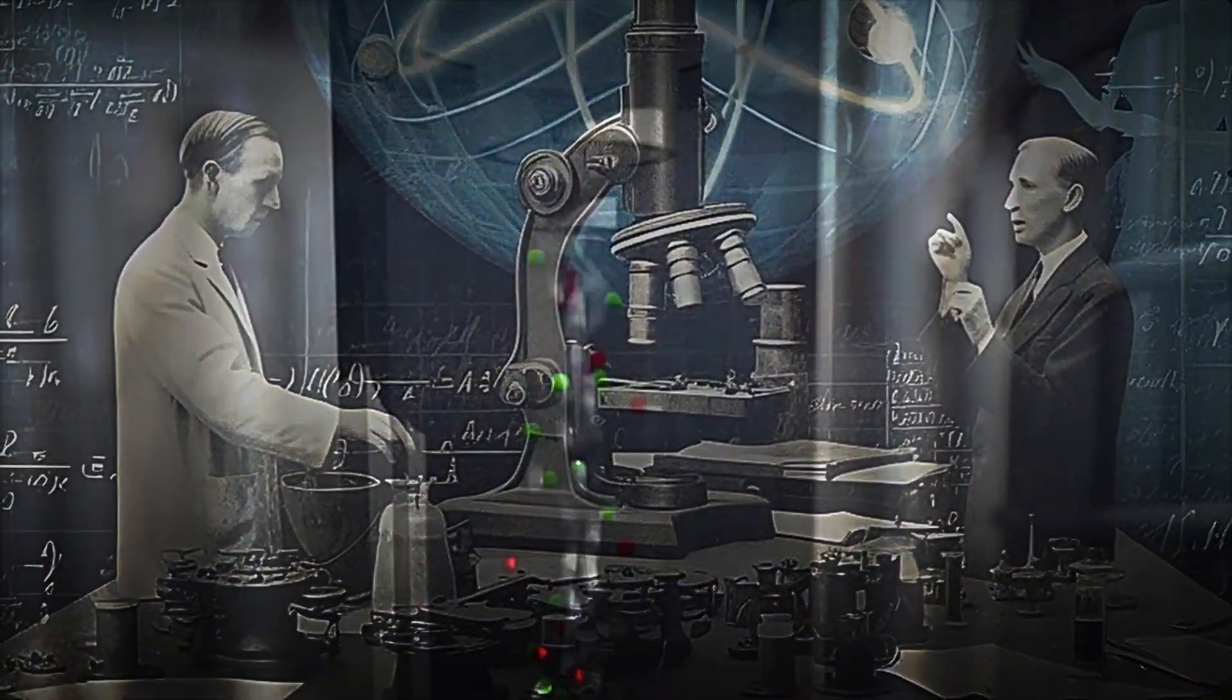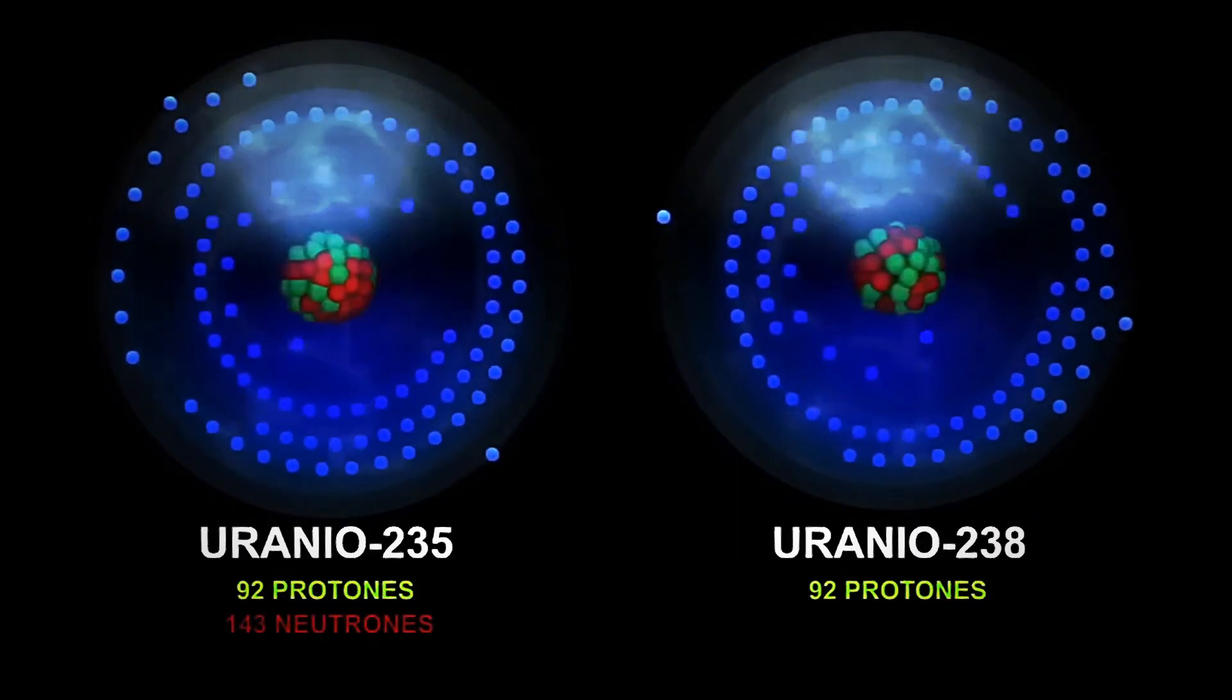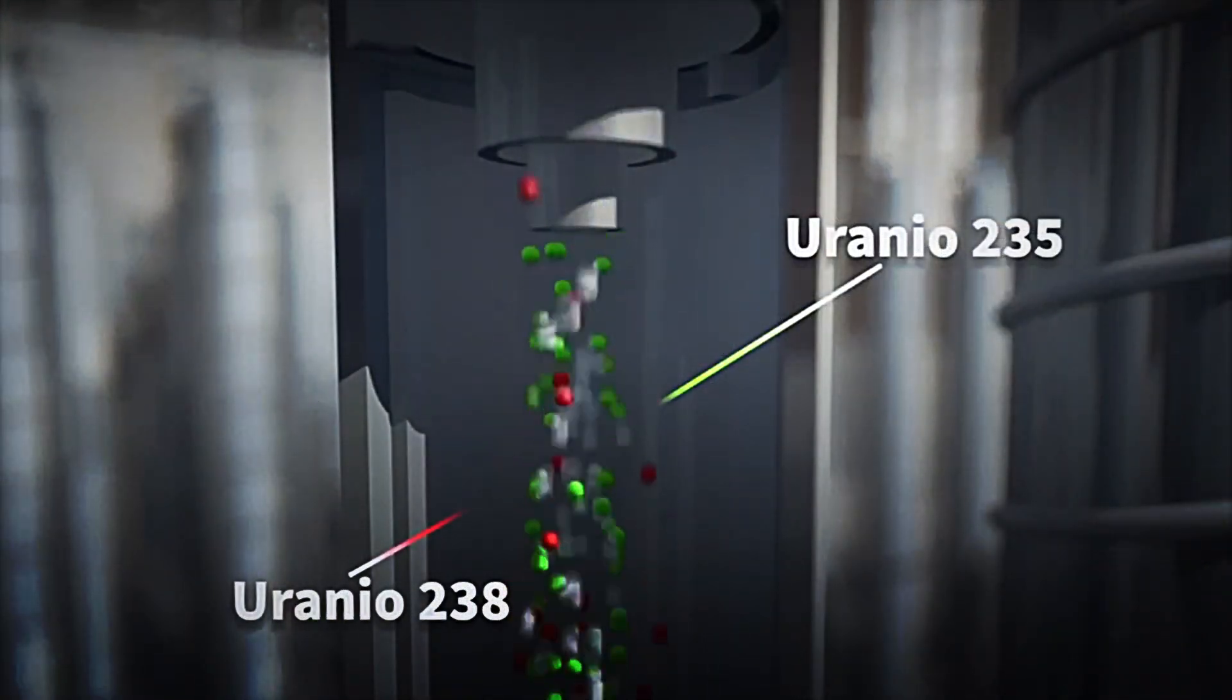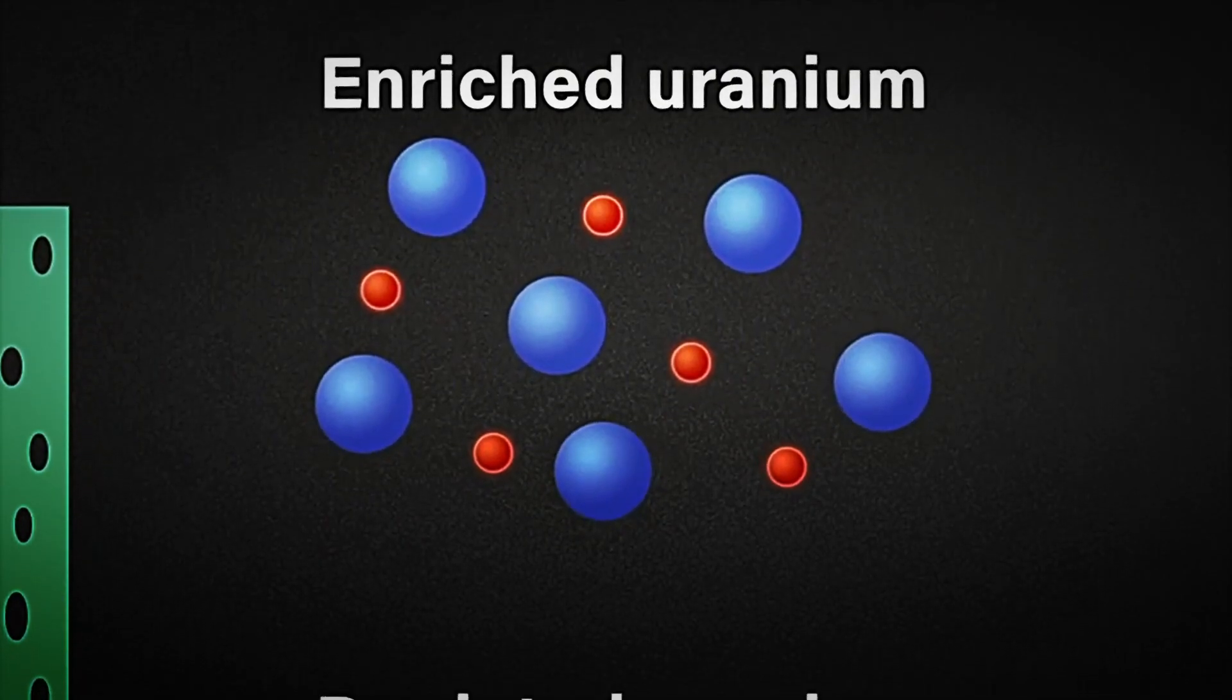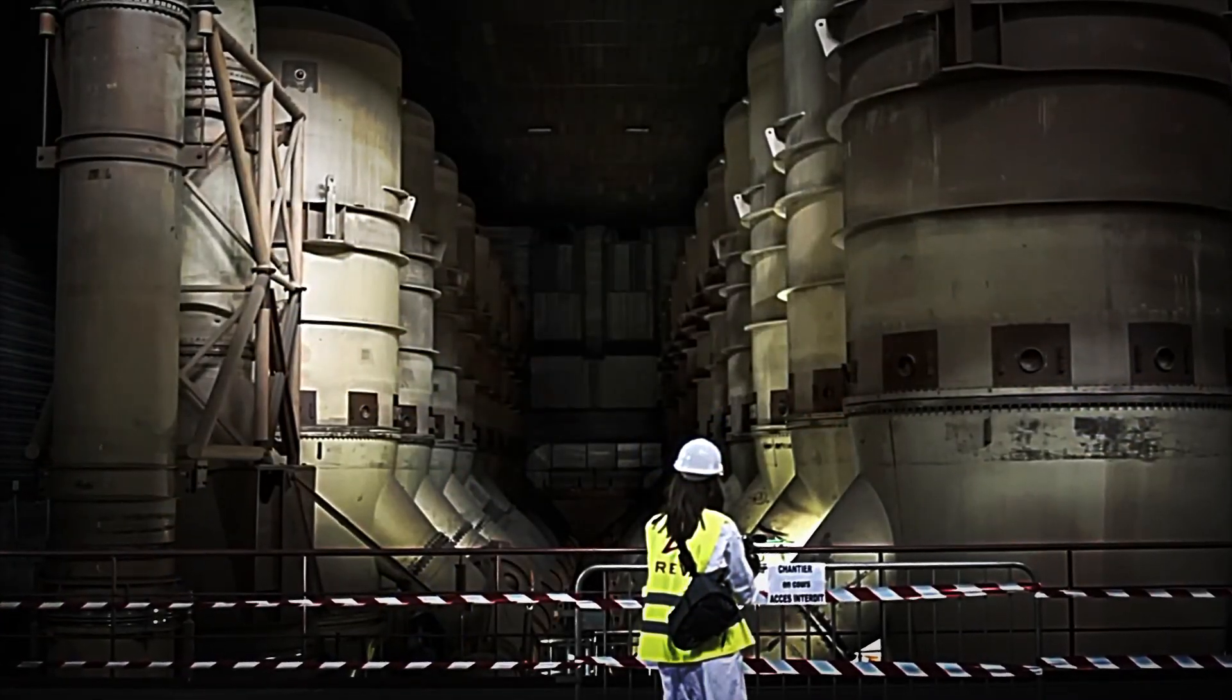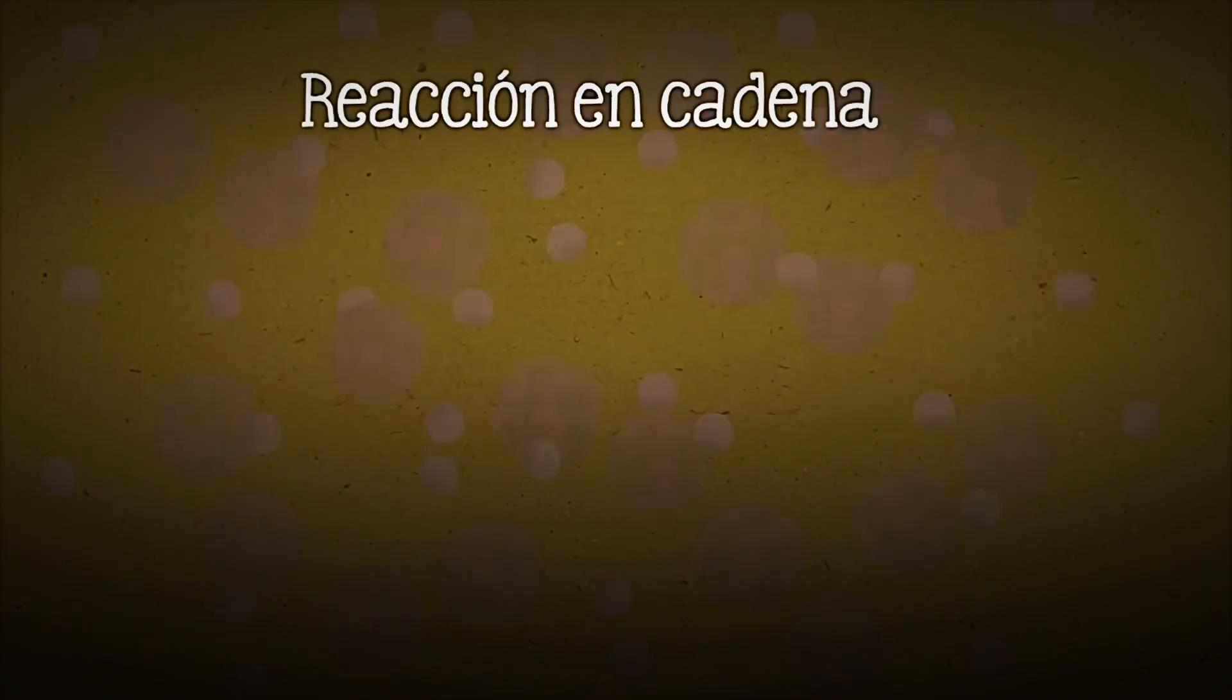The challenge, however, was to develop a version of uranium more suitable for this process. Natural uranium is composed of 99.3% uranium-238, which does not fission easily, and just 0.7% uranium-235, which is ideal for fission. Hence, the need arose to enrich it, that is to increase the proportion of uranium-235.